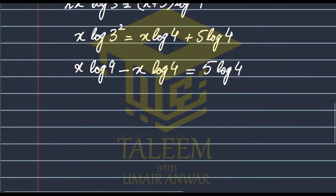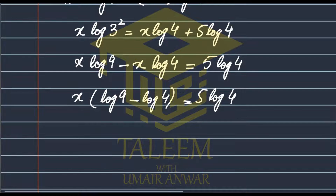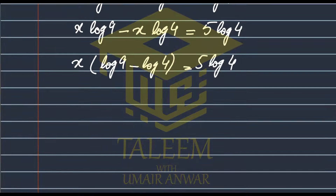Now we factor out x to get x times (log 9 minus log 4) equals 5 times log 4. From this, we can find the value of x.